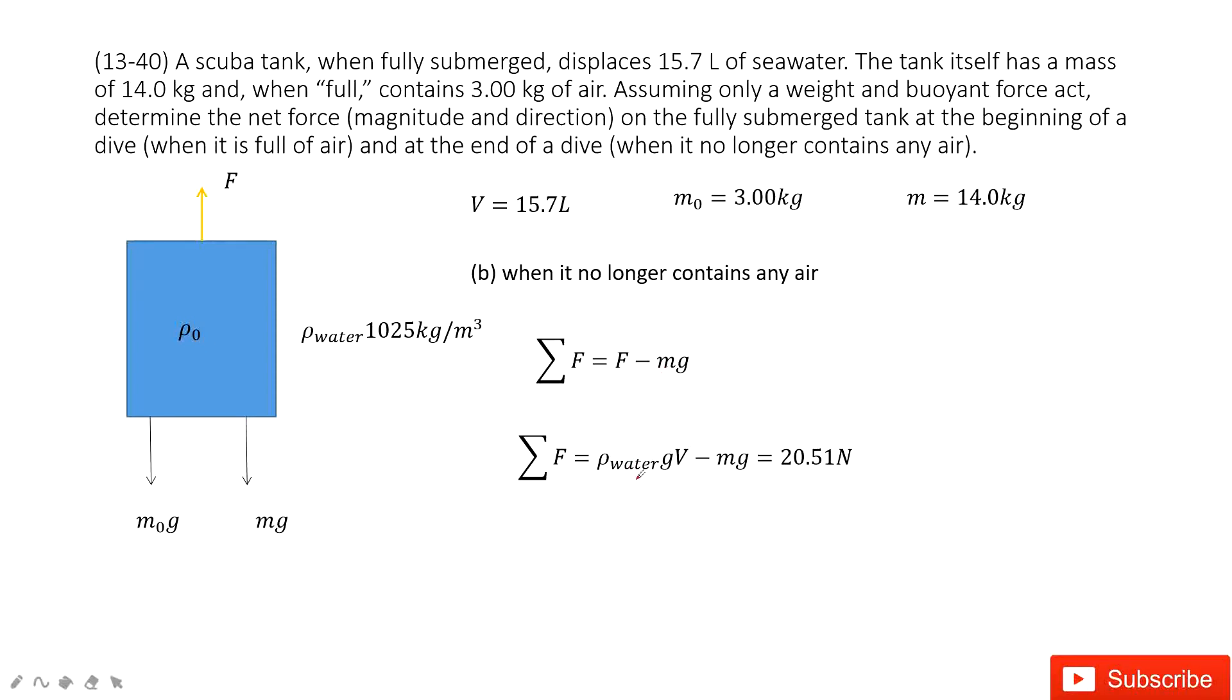So we can see the buoyancy is the gravity of the seawater replaced by this object. ρ_water g V minus m_tank g. Now we input the known quantities. Can you find the answer there? Thank you.